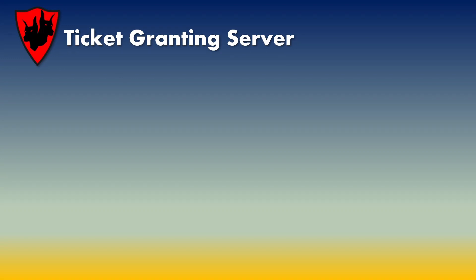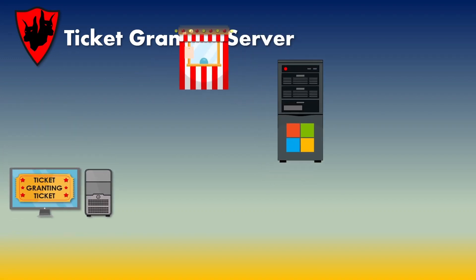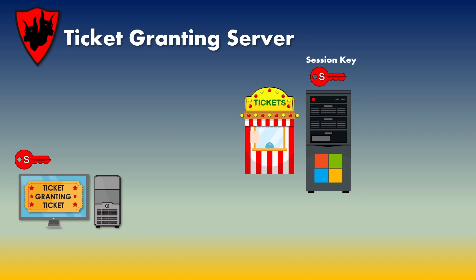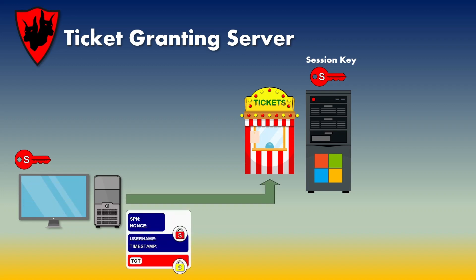Now we are going to look at the ticket granting server side of the Kerberos protocol. We'll bring back the client and user which has already been authenticated by the authentication server service, and we'll also bring back the domain controller which is running the ticket granting server service. In the authentication stage the client was given both a ticket granting ticket — currently stored in the Kerberos tray — and a session key to communicate with the KDC. As the client wants to access a service on the network, it sends a message to the ticket granting server in clear text containing the service principal name of the file server. It also sends the principal details — the username and the current timestamp — encrypted with the session key. The third thing it sends is the TGT ticket, which is removed from the Kerberos tray and encrypted using the KDC's credentials.